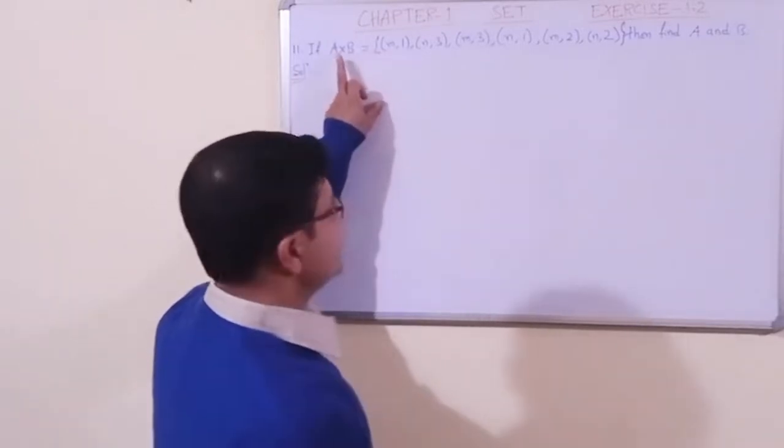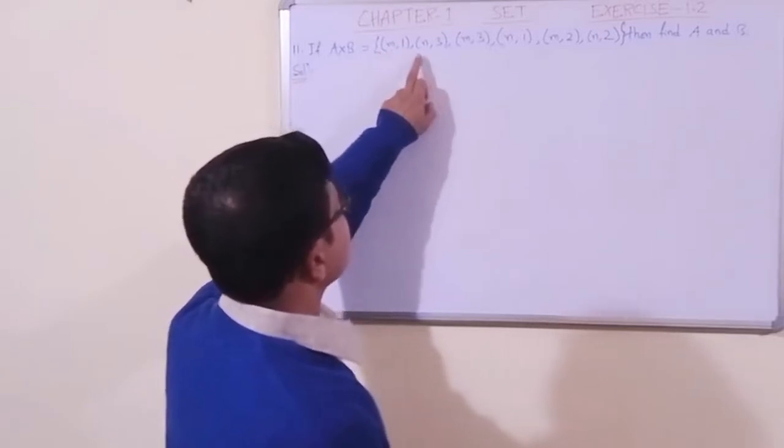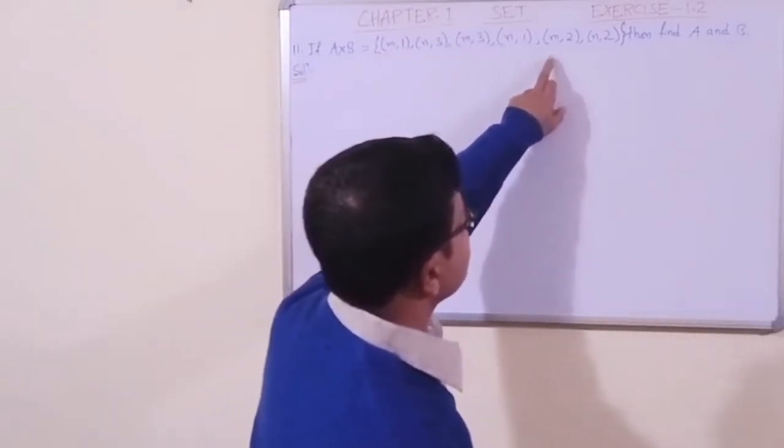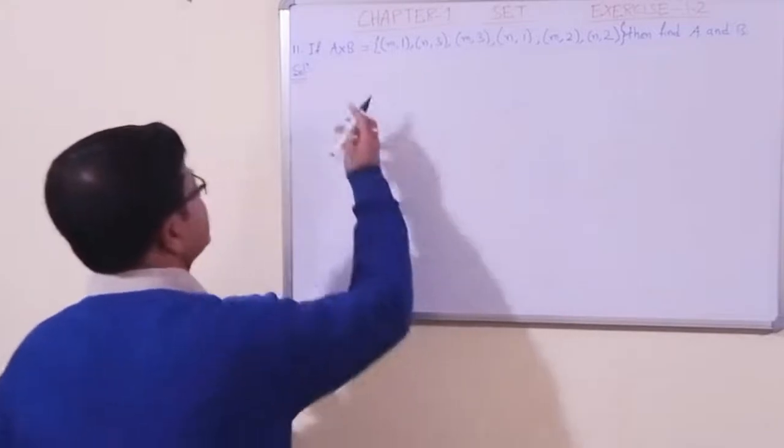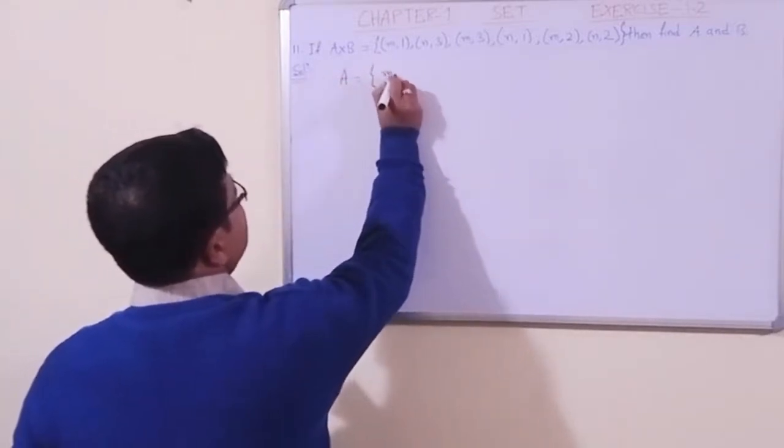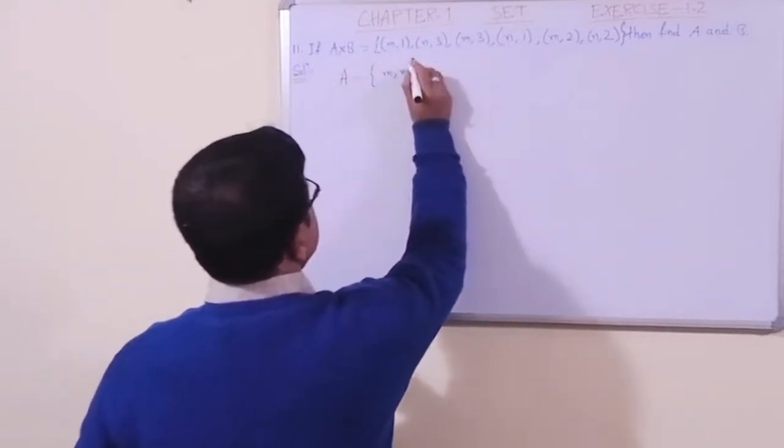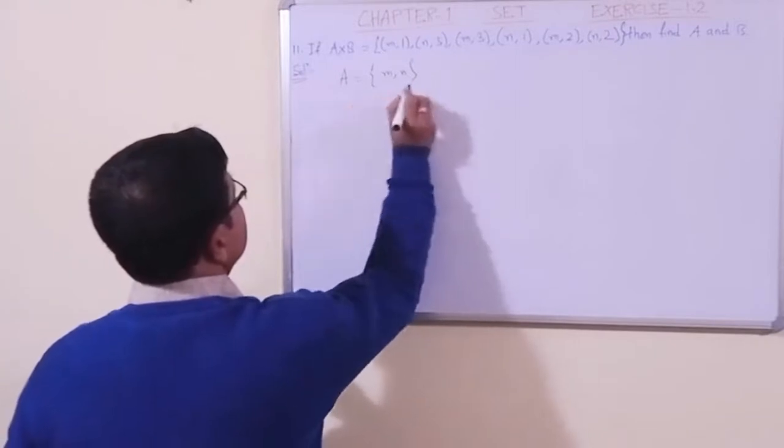We are talking about the elements of set A. From here we can write the set A. So set A is... the identified elements from the x-coordinates.